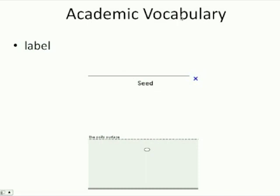Academic Vocabulary: Label. If you look at this picture, it is labeled. Here it says "seed" and here it says "the soil's surface." Those are labels that tell you what is in the picture.